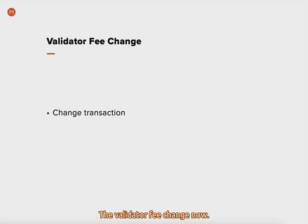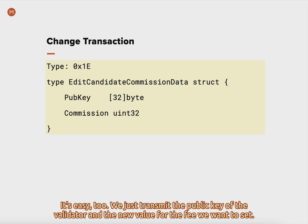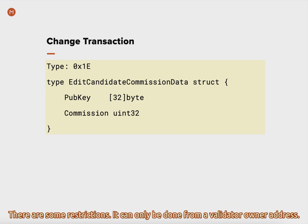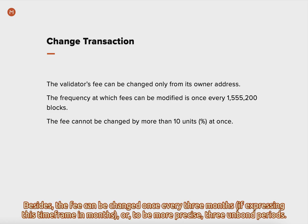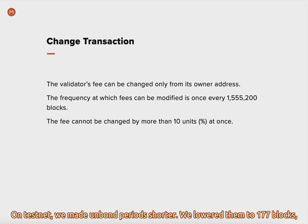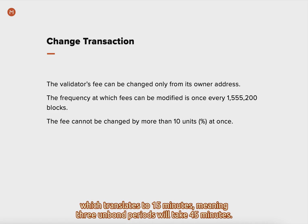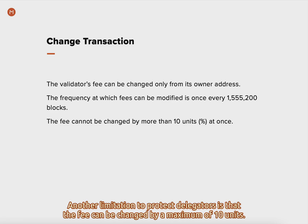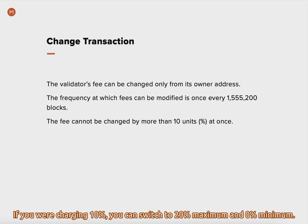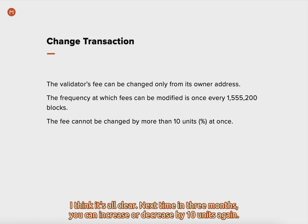The validator fee change is easy too. We just transmit the public key of the validator and the new value for the fee we want to set. It can only be done from a validator owner address. The fee can be changed once every three months, or more precisely, three unbond periods. On testnet, we made unbond periods shorter, lowered to 177 blocks, which translates to 15 minutes, meaning three unbond periods will take 45 minutes. So on testnet, validators can update their fees once every 45 minutes. Another limitation to protect delegators is that the fee can be changed by a maximum of 10 units. If you were charging 10%, you can switch to 20% maximum and 0% minimum; if 50%, then 60% and 40%, respectively. Next time in three months, you can increase or decrease by 10 units again.